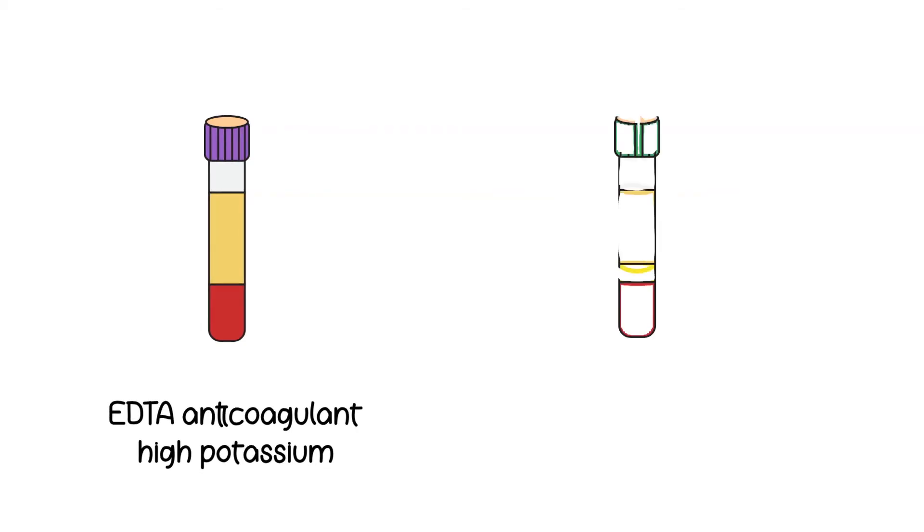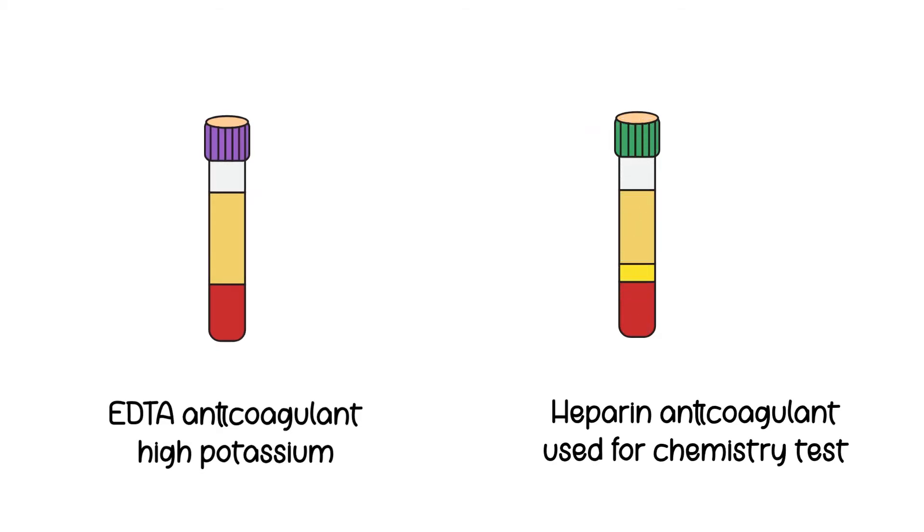The anticoagulant that is in the green top tube is the heparin, which is a preferred tube for potassium analysis because it doesn't have the added potassium that would interfere with the testing results.